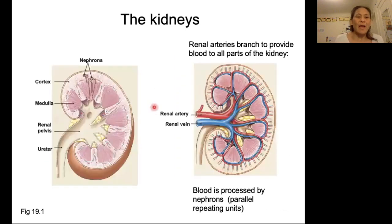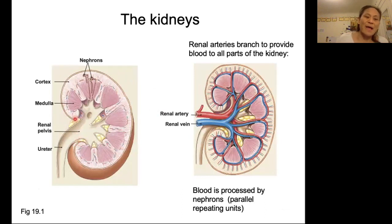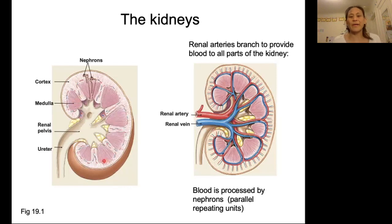Kidneys consist of two main sections. We have an outer portion called the cortex, shown in light pink here, and then a darker pink area called the medulla. Remember, cortex means covering or outside, and medulla means middle — that's what we have going on here.